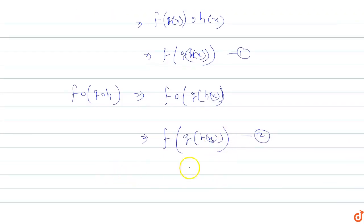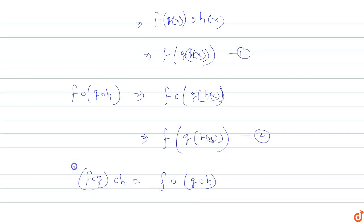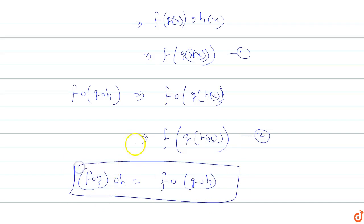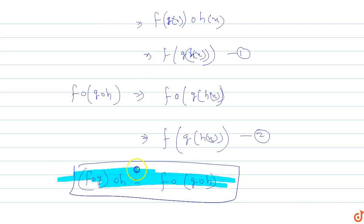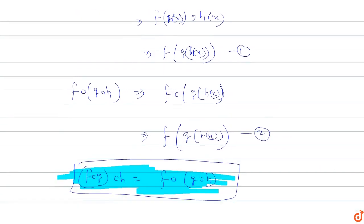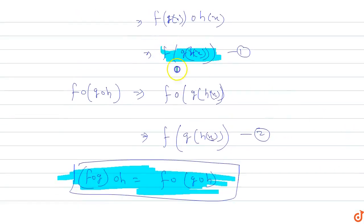From the first and second equations, we can say that f∘(g∘h) equals (f∘g)∘h, since both sides equal f(g(h(x))). Hence proved.